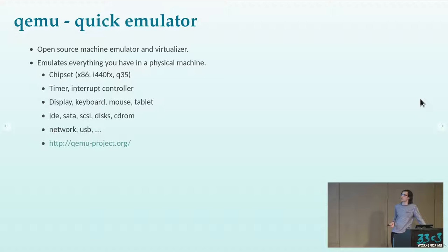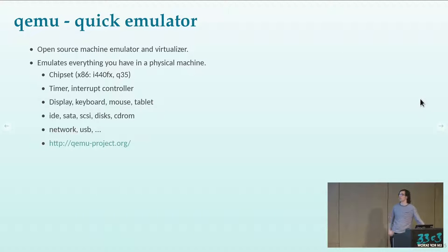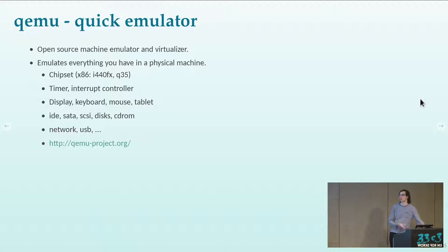QEMU is an open-source machine emulator and virtualizer. It emulates all the stuff you have in a physical machine: the chipset, timer, interrupt controller, virtual graphics card, keyboard and mouse emulation, a built-in VNC server, storage, network, and USB.